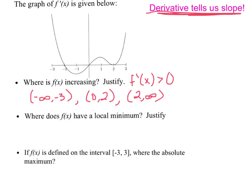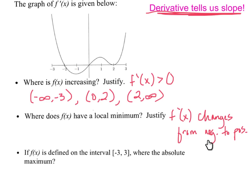Next, where does f have a local minimum? Here we're looking for where f prime changes from negative to positive, because then f would have changed from decreasing to increasing. So, that occurs at x equals zero.